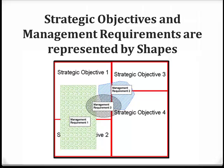Spatial fire planning requires spatial data, whereas FMU planning does not. In this graphic, you can see that strategic objectives do not overlap each other, but provide full coverage for the unit. Management requirements, in contrast, overlap strategic objectives and can overlap each other as well.